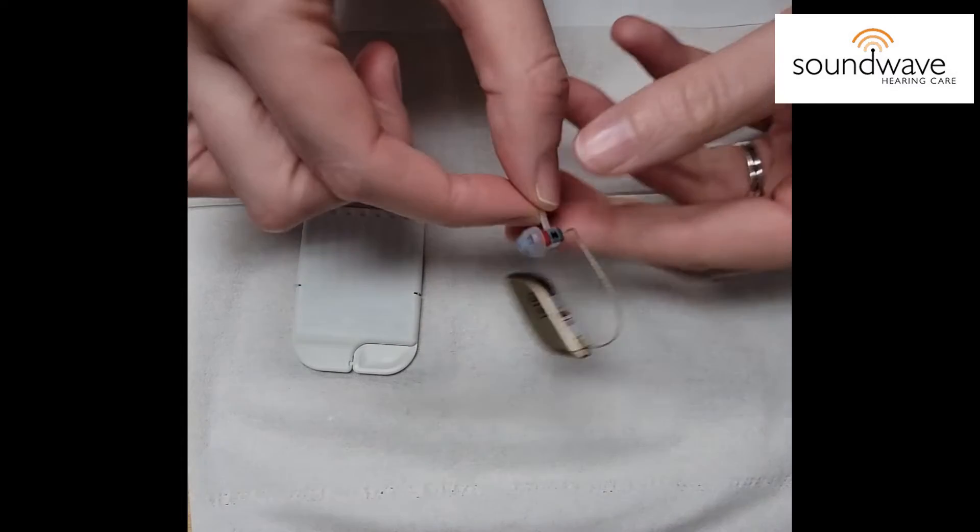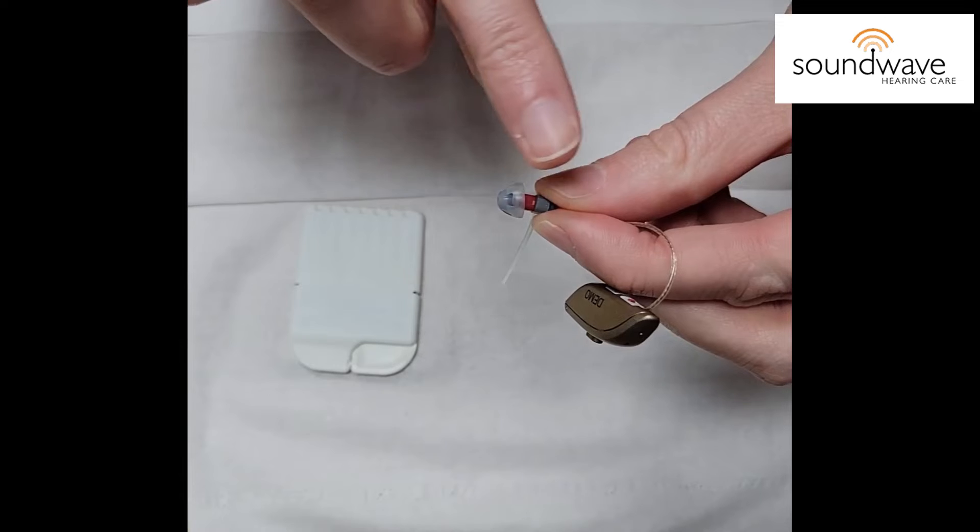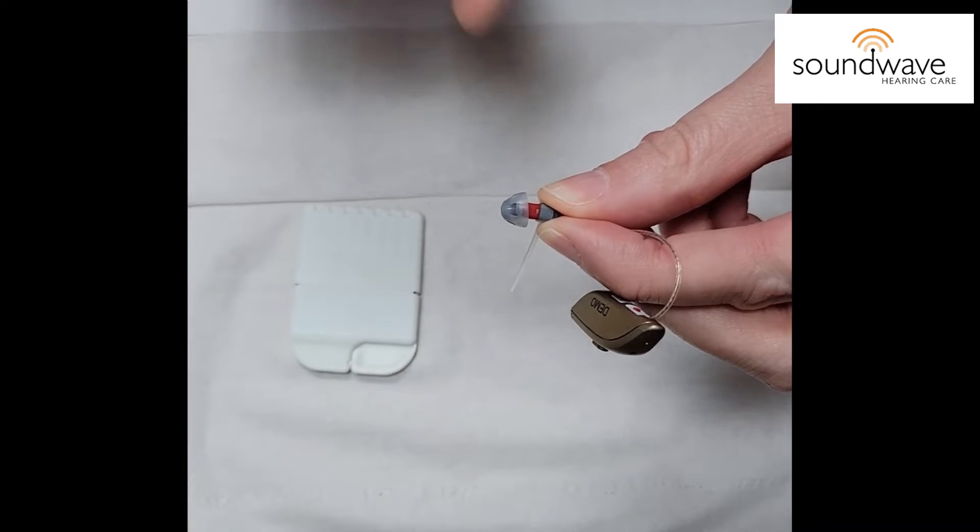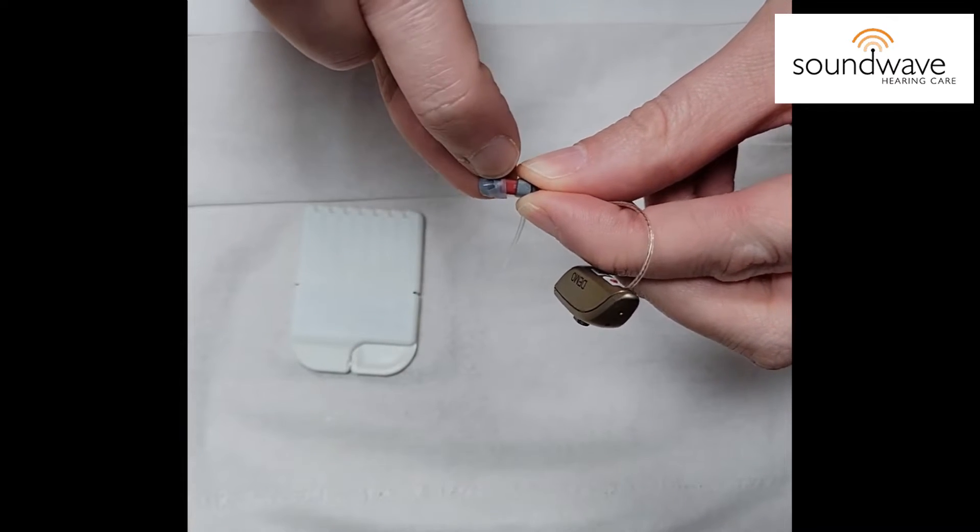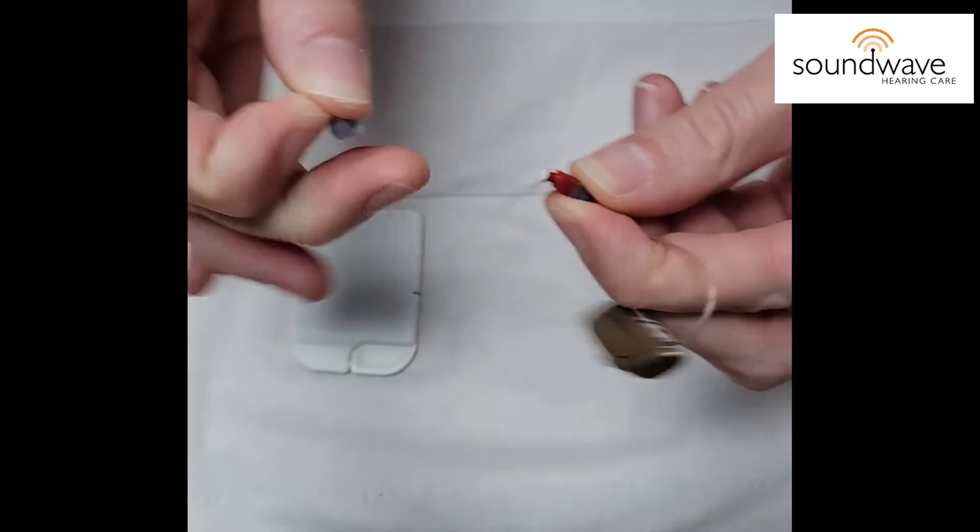What you need to do is you're going to grab your hearing aid and we need to remove this little silicone cap. To do that I recommend giving it a little pinch and pulling it off.